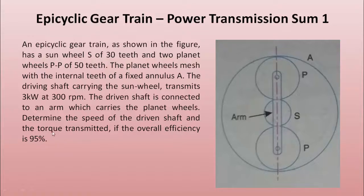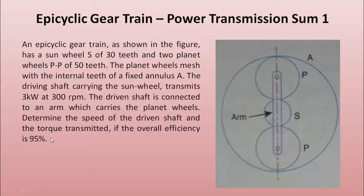Torque is basically the amount of force required to rotate a body. It is asking what will be the torque produced in arm A if the overall efficiency is 95 percent. That means 3 kilowatt is the input power, but some power will be lost in friction, noise, and heating up of parts — 5 percent of 3 kilowatt. The remaining power is coming out from the output shaft.